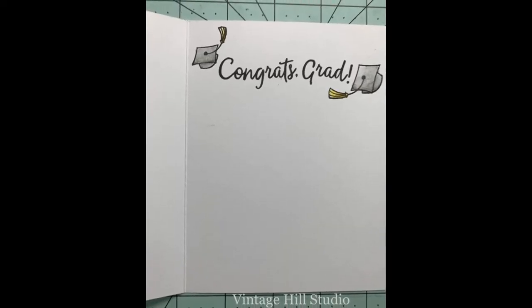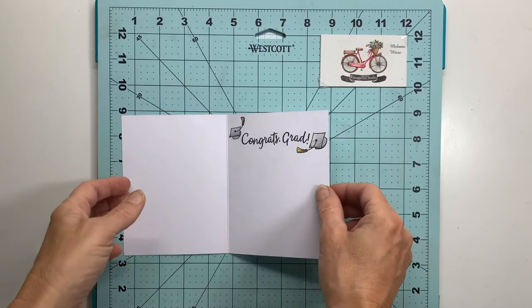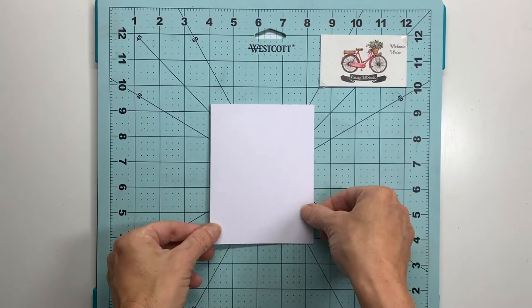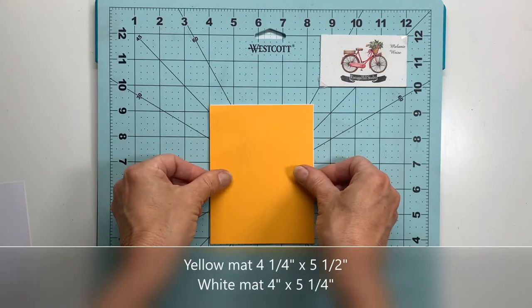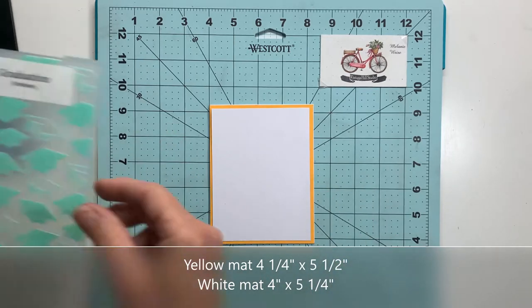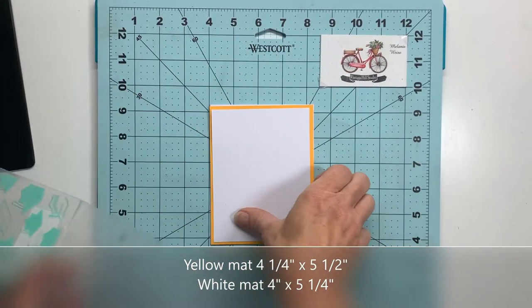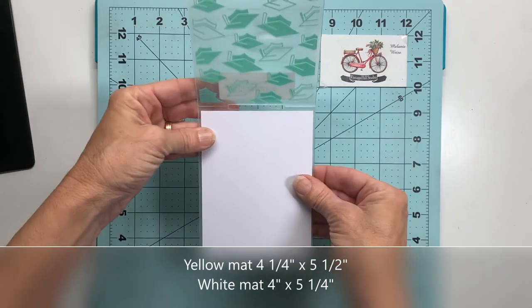So now we're going to move on to the outside of the card, the front of the card. I'll be adding a little bit of dimension, which is why I wanted to do the inside of my card first. You can see I'm going to adhere a yellow mat, and then on this white mat I'm going to use that embossing folder, which the white mat fits in there perfectly.